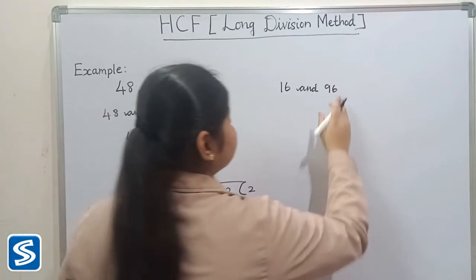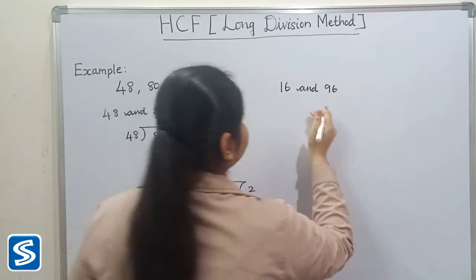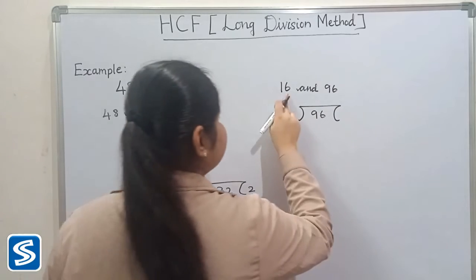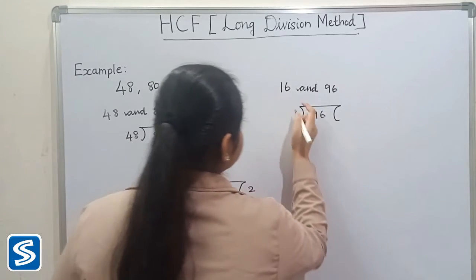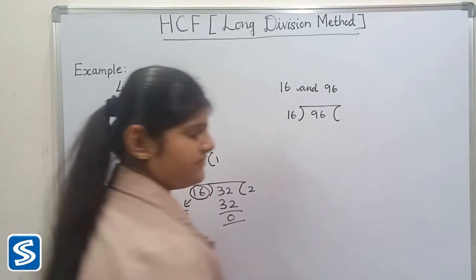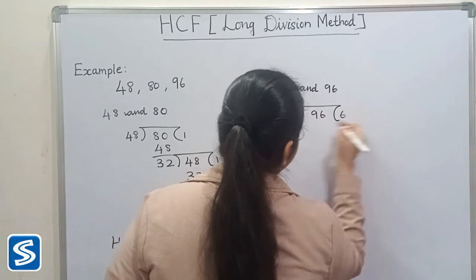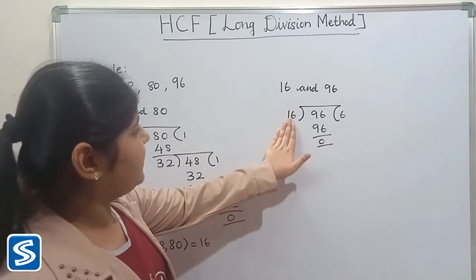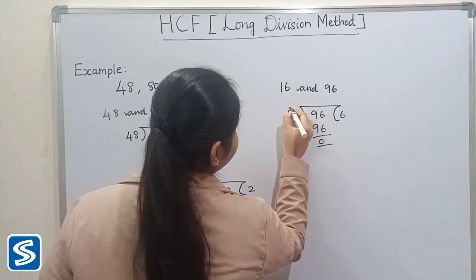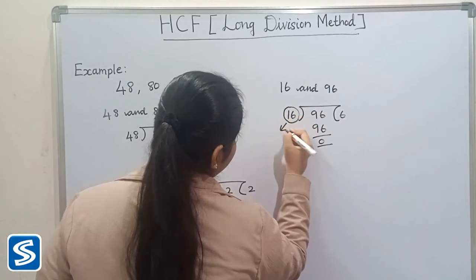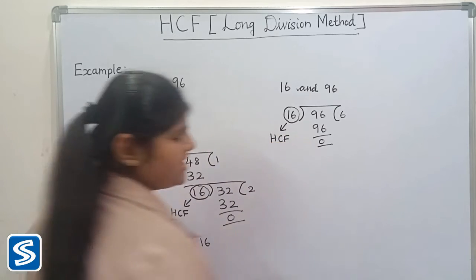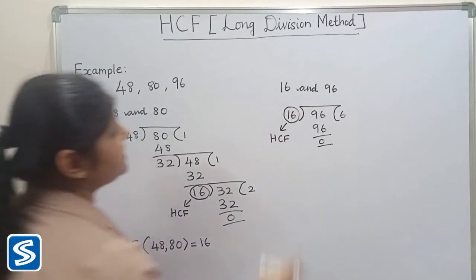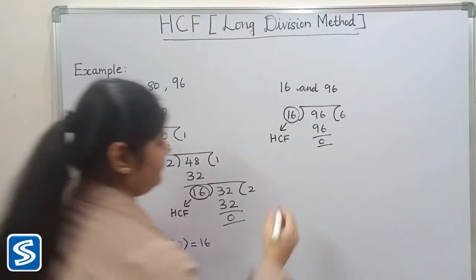Now we have to take 96 as the dividend. Here the smallest number is 16, so now we have to consider 16 as the divisor. 16 sixes are 96, so the remainder will be 0. Here the divisor is 16, so 16 will be the HCF. Therefore, the HCF of 48, 80, and 96 is 16.